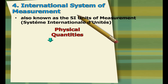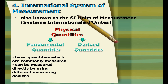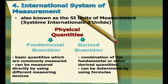The International System of Units, abbreviated as SI from the French 'Le Système International d'Unités,' is the modern form of the metric system. It is the system of units that the General Conference on Weights and Measures has agreed upon and is legally enforced in almost all parts of the world. It is based on physical quantities — fundamental quantities and derived quantities. Fundamental quantities are basic quantities that can be measured directly using different measuring devices, while derived quantities are combinations of fundamental or other derived quantities determined by using a formula.